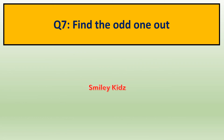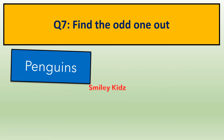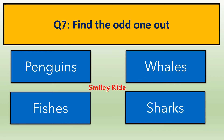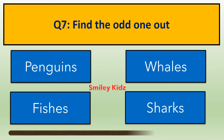Question number 7. Point the odd one out. Options are: A. Penguins, B. Whales, C. Fishes, D. Sharks. The right answer is Penguins. Whales, Fishes and Sharks belong to Ocean Habitat, and Penguins belong to Polar Regions.